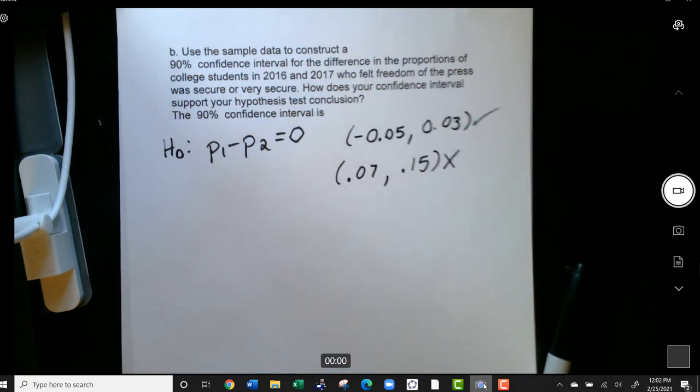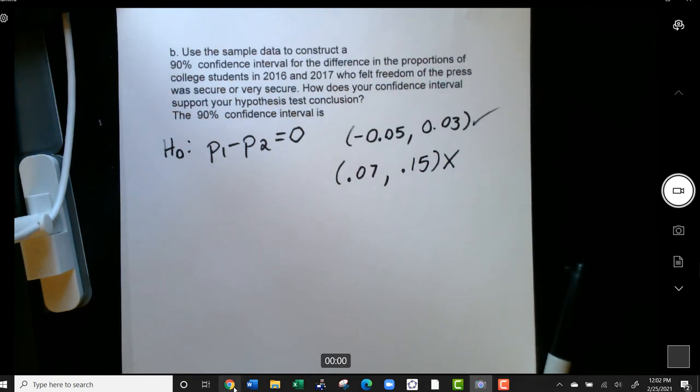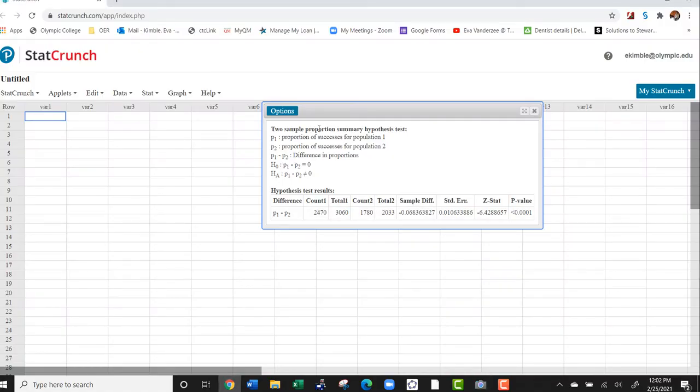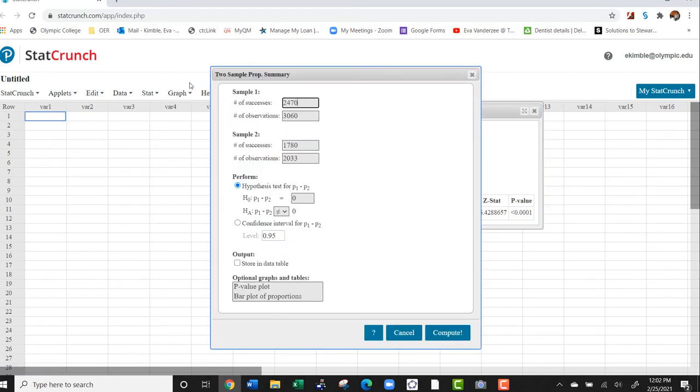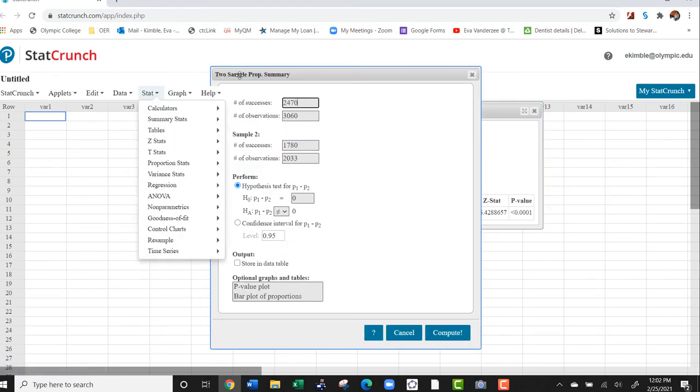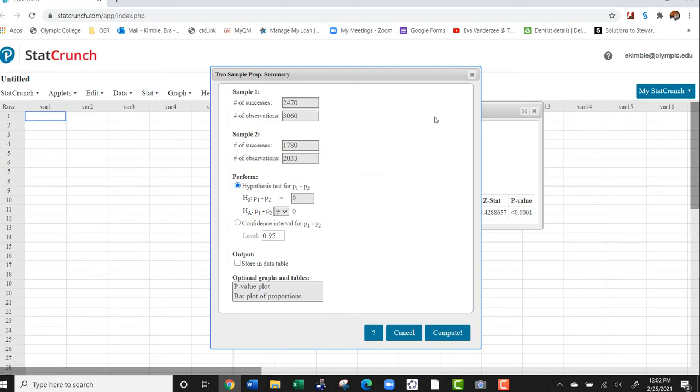Now, here's how you're going to create a confidence interval using StatCrunch. Again, it's complicated to do it by hand, so we're just going to use technology. So you're going to go to the exact same place you did to do the hypothesis test. You're going to go to Stat, Proportion Stats, two samples with summary. You're going to enter the data the exact same way you did before.